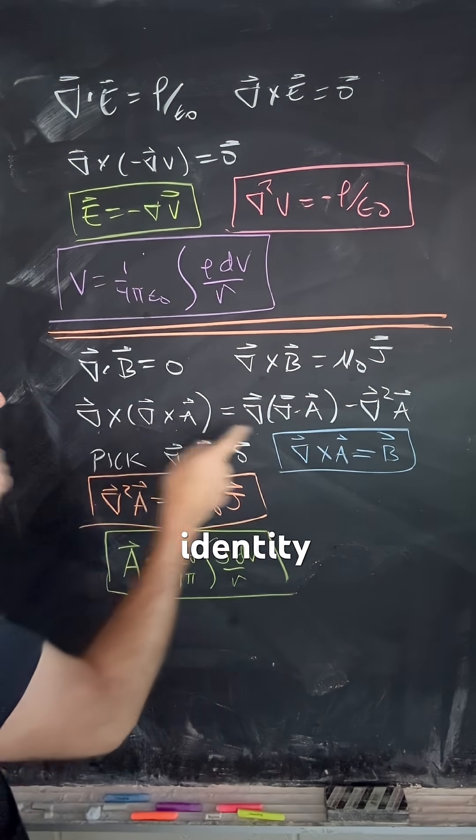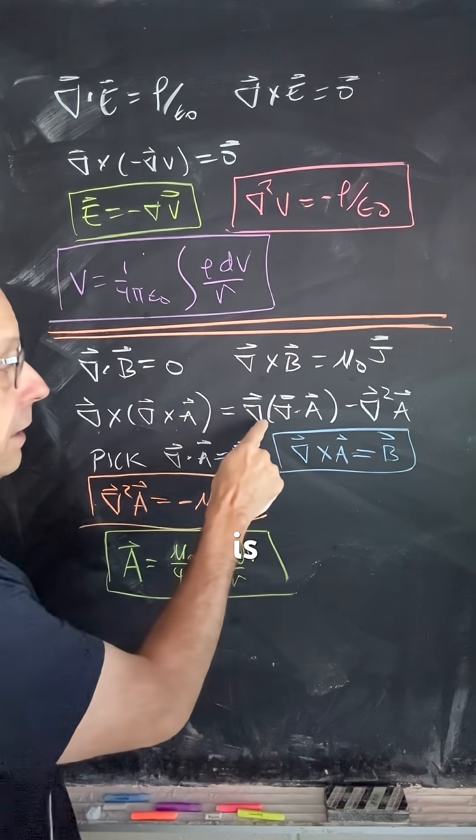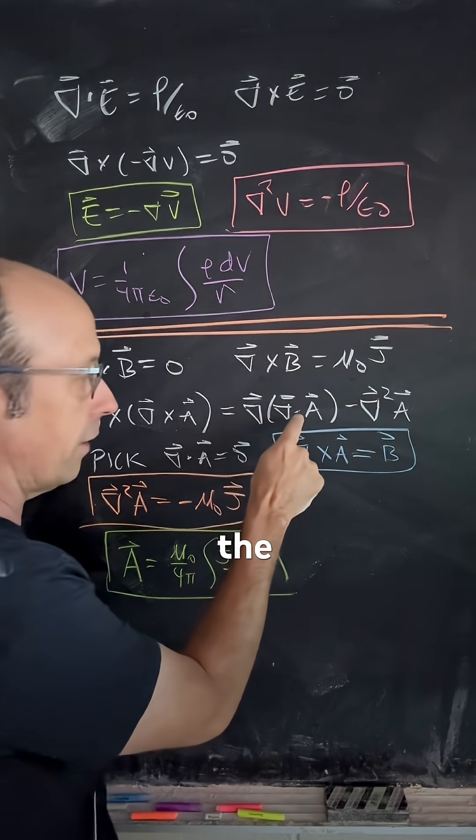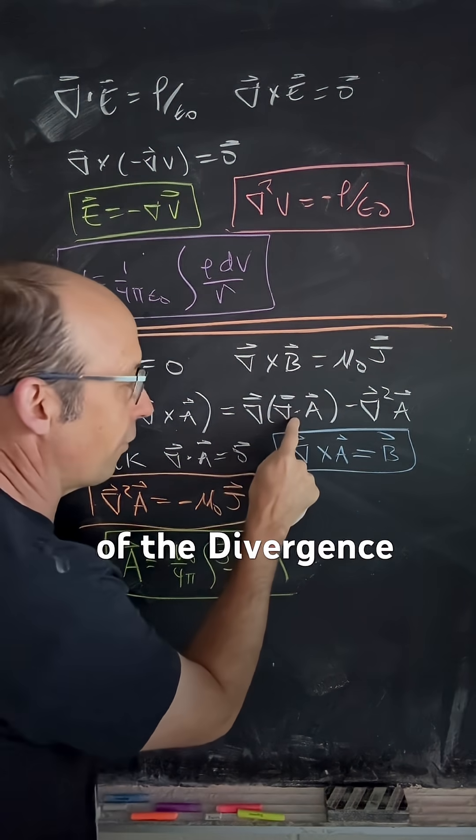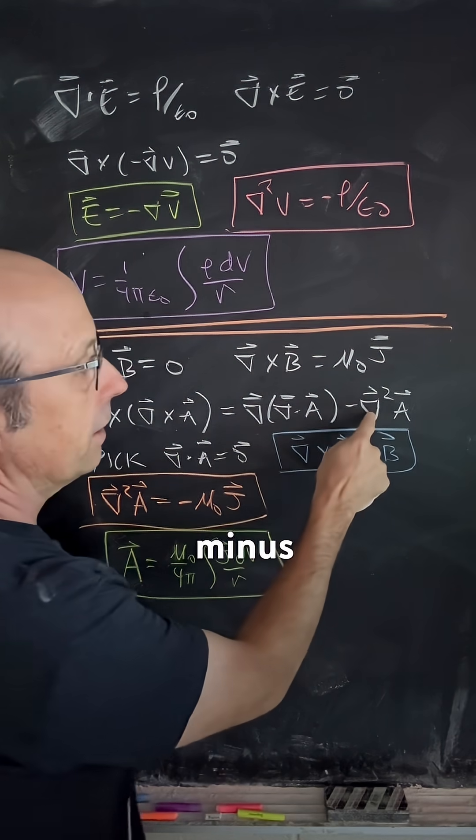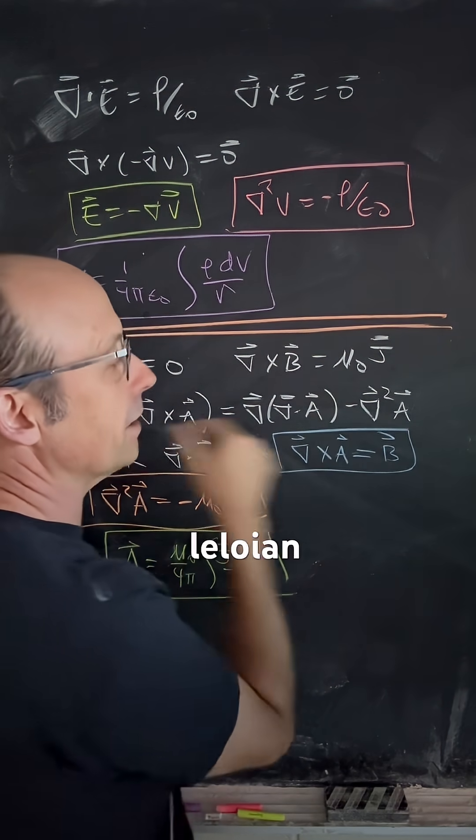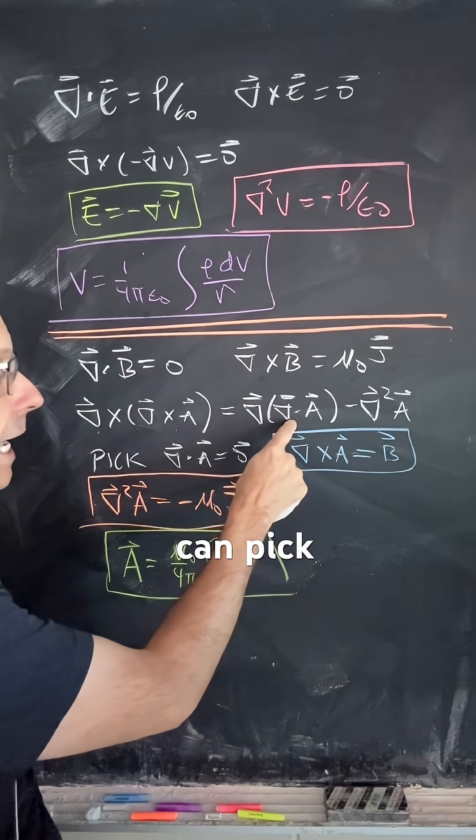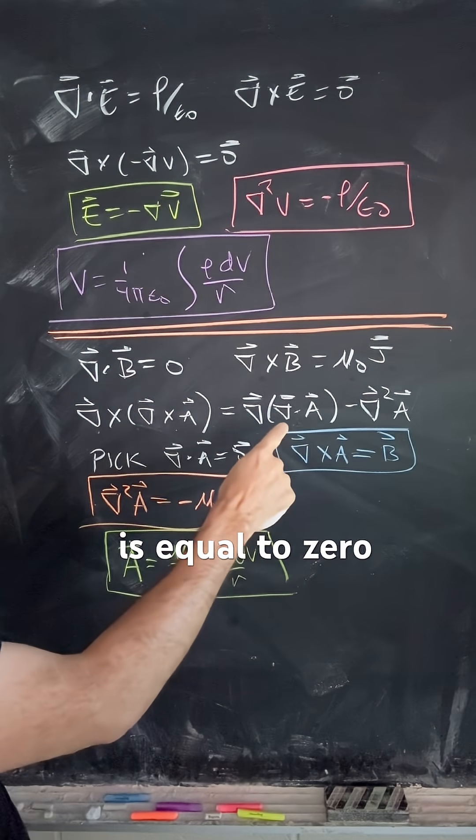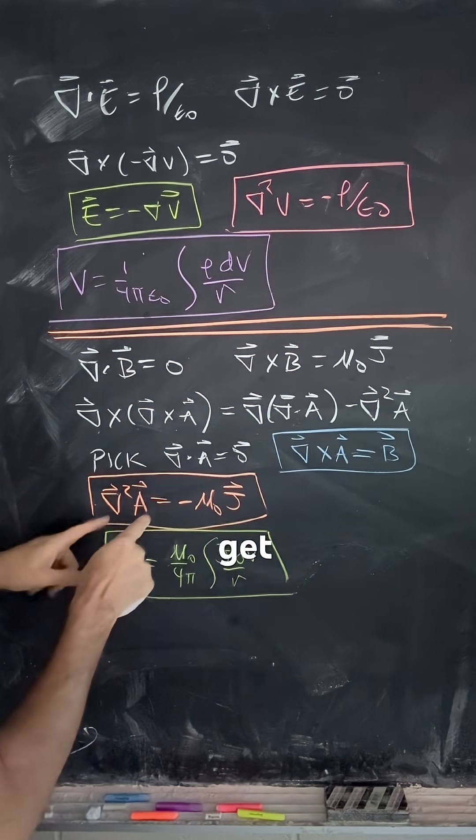If we put that in, there's a vector identity says that the curl of the curl of A is the gradient of the divergence of A minus the vector Laplacian of A. So, we can pick del dot A is equal to zero, and then we get this.